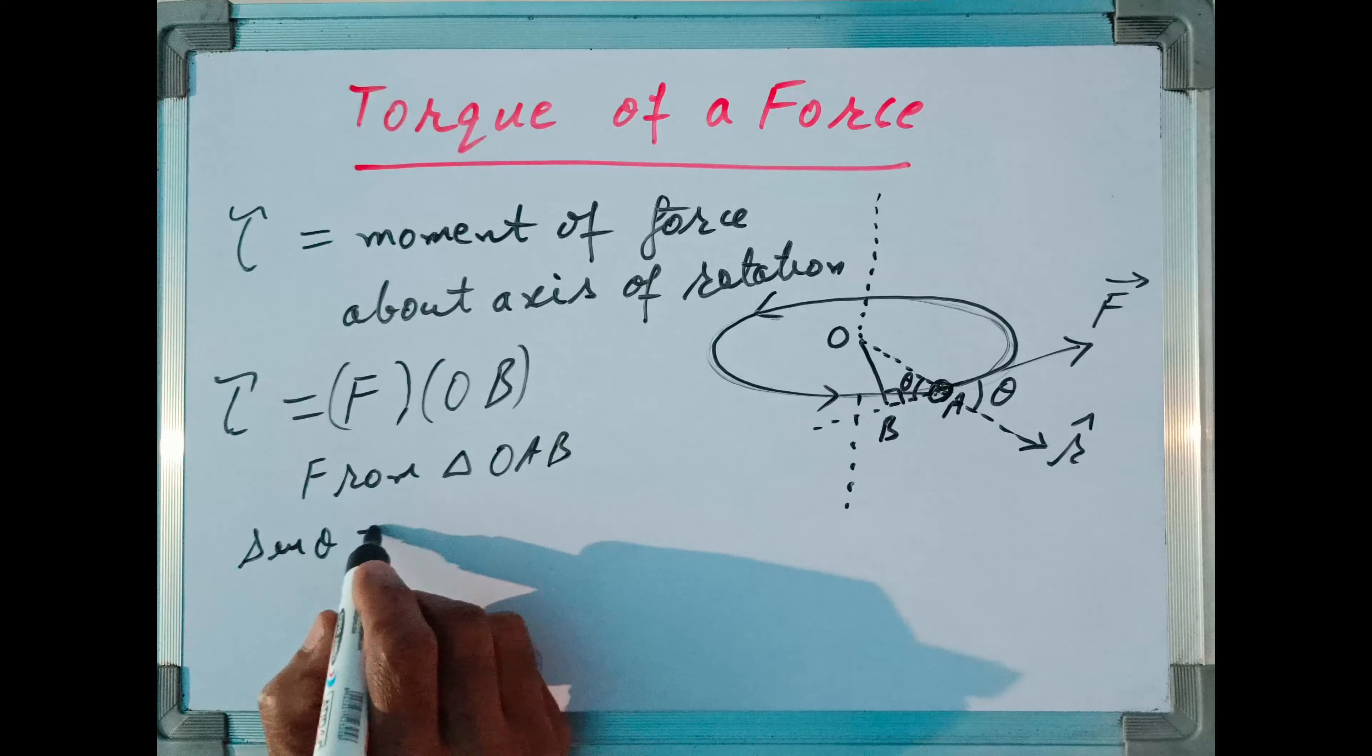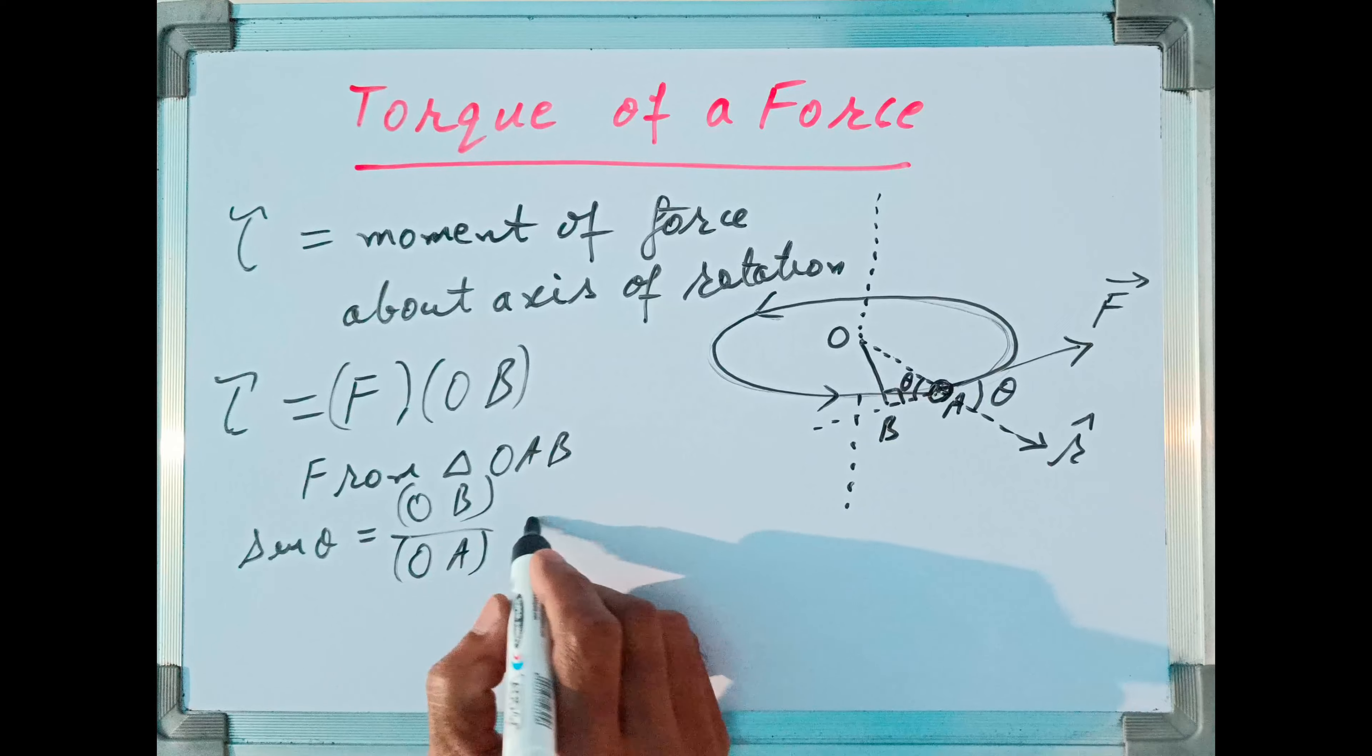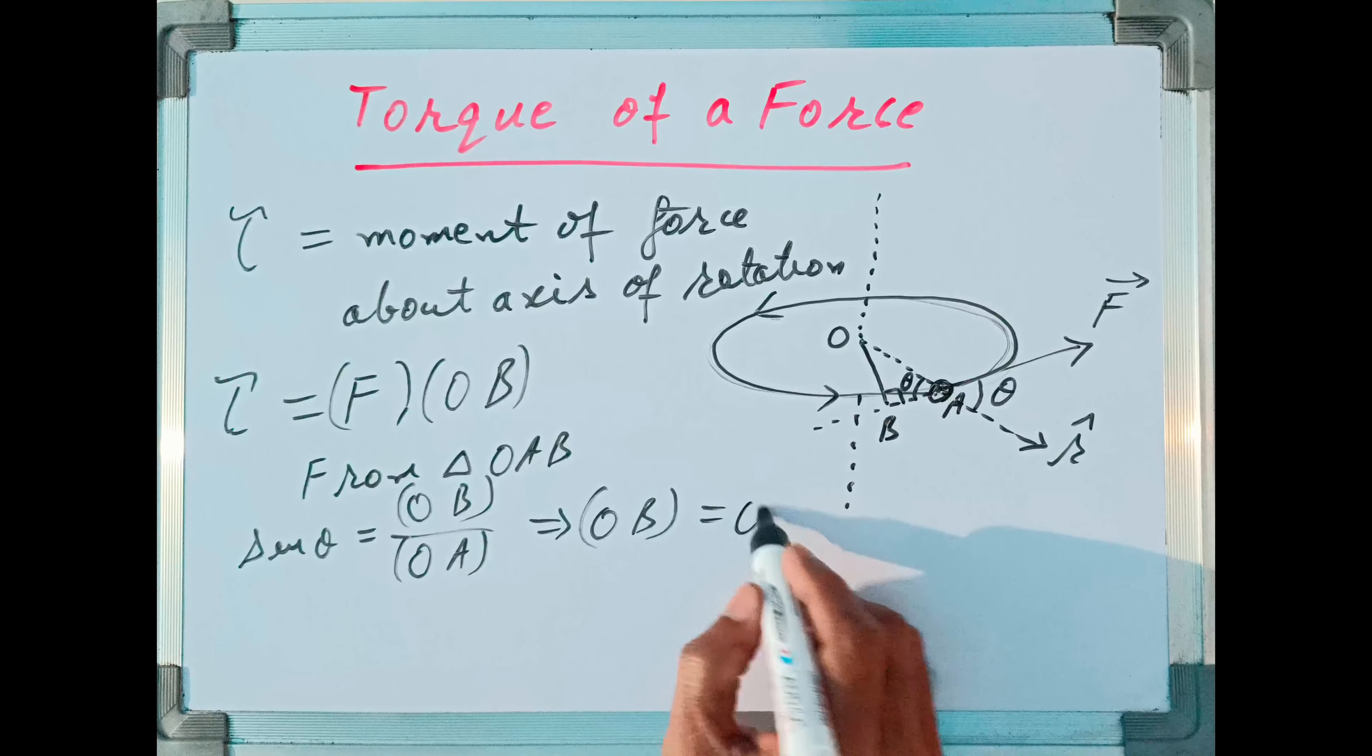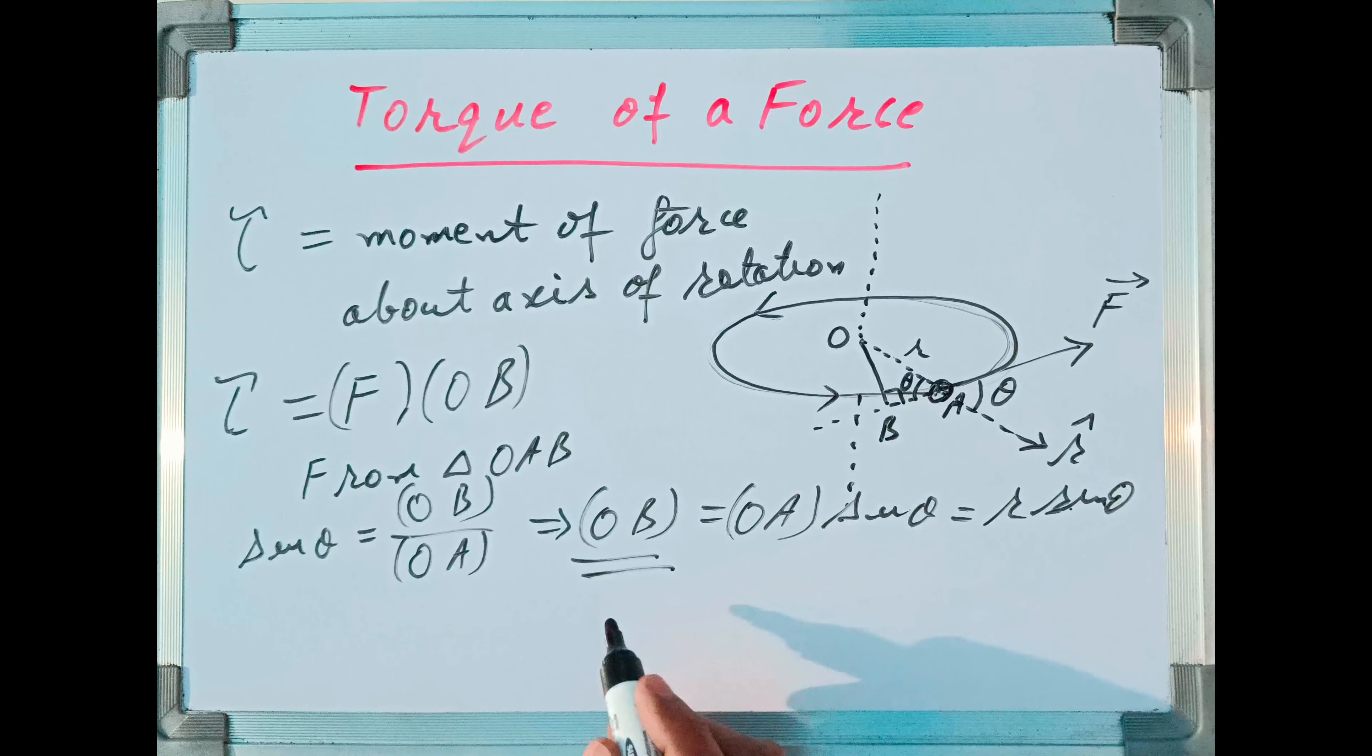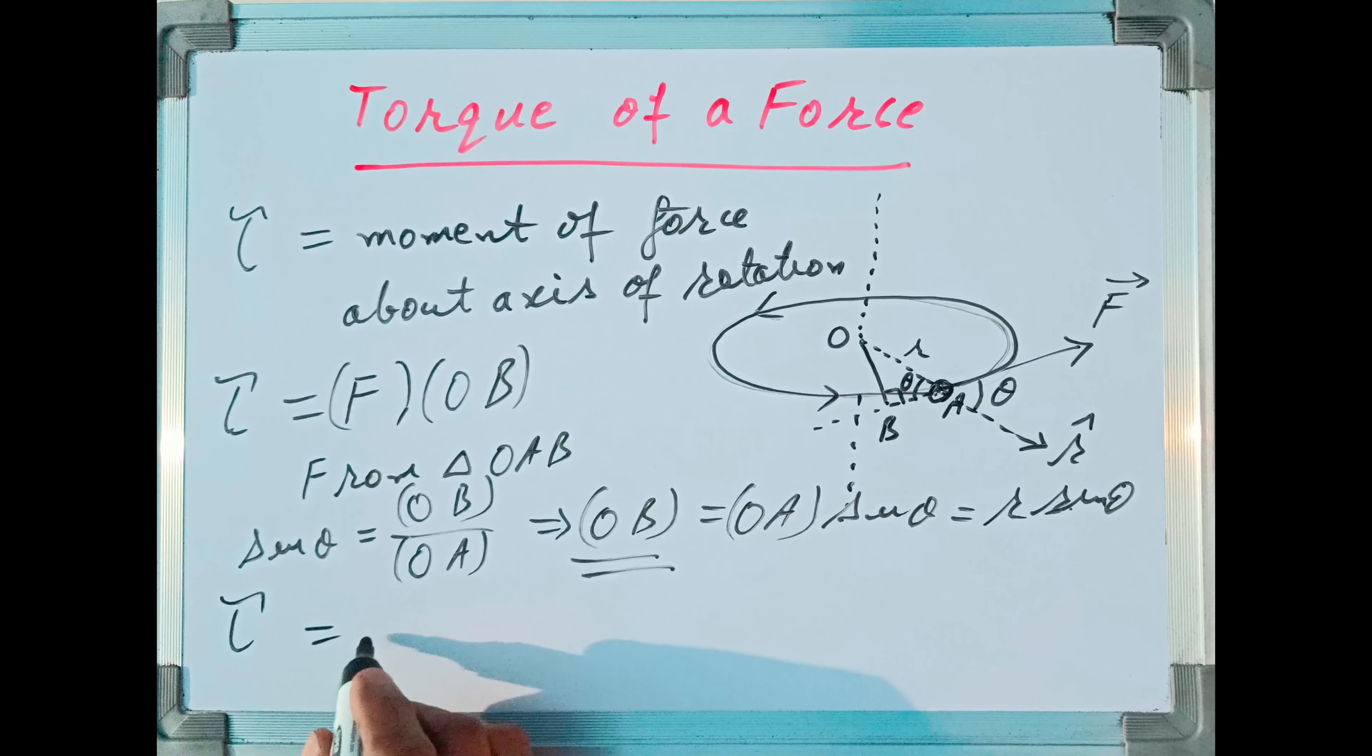How to find this OB? Let me produce this radius vector forward. Suppose R vector and F vector have angle theta between them. If this angle is theta, this will also be theta. So from this triangle OAB, I can find value of sin theta as perpendicular OB divided by hypotenuse OA.